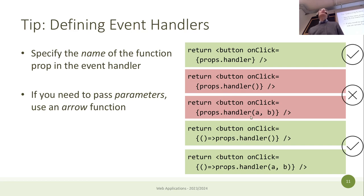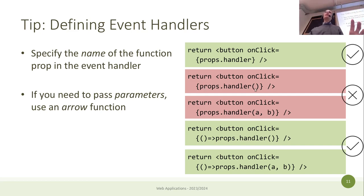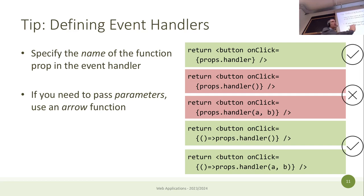We're not just preferring this approach — we must. Calling the function immediately returns undefined, which is useless. We want to execute these functions only when the event happens, not when we define the element in JSX. So it's not a preference — writing the function call directly is simply wrong. The correct ways instead specify a reference to a function — a callback — that will be called when the event happens.